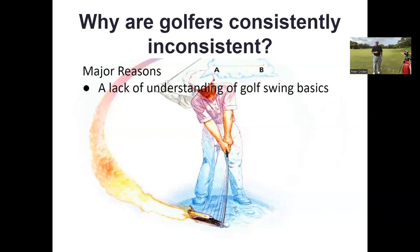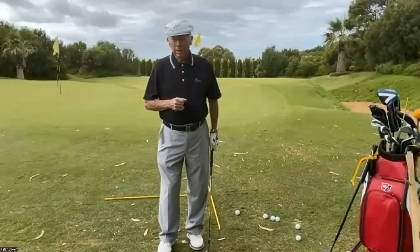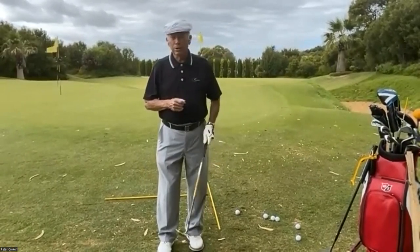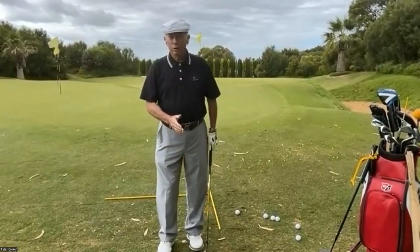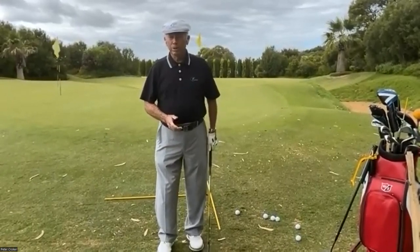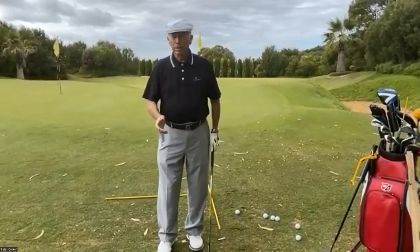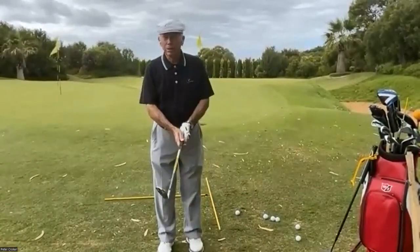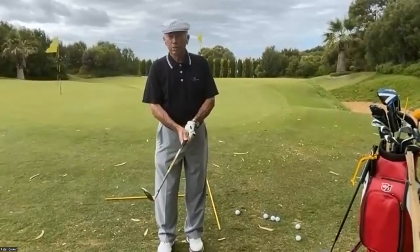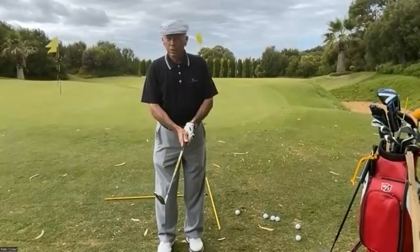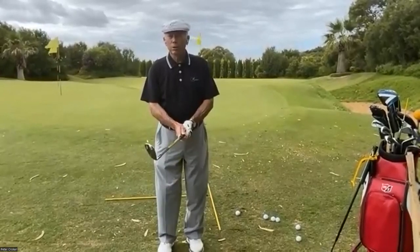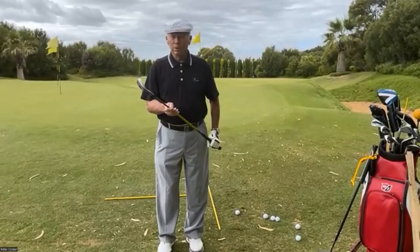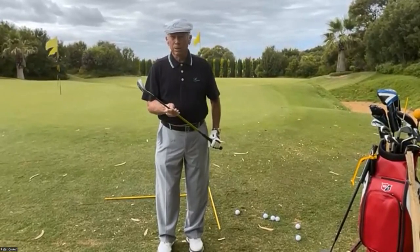Every golfer wants to be more consistent — more consistently hitting the ball where they want it to go. To do that you need a technique that provides solid impact every shot, which requires a good swing. The golf swing basics — the grip, setup, backswing, downswing — if any part is off, it interferes with your ability to time the shot. With good basics, timing is minimal; with bad basics you're relying on timing, and if you get tense or nervous, timing becomes very difficult.